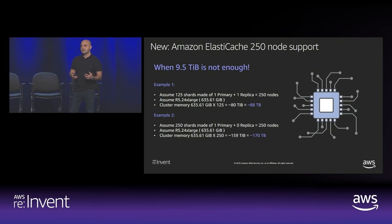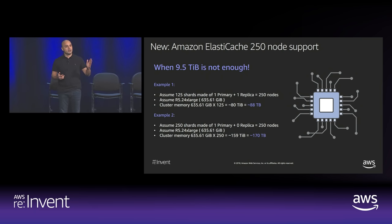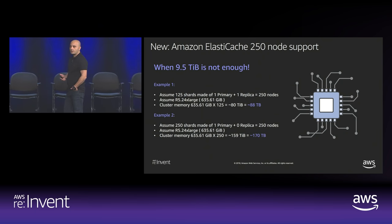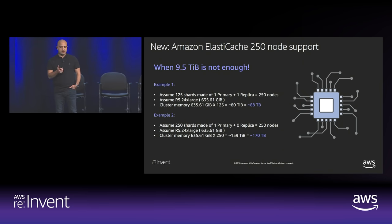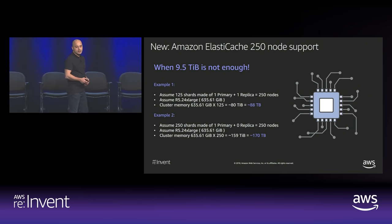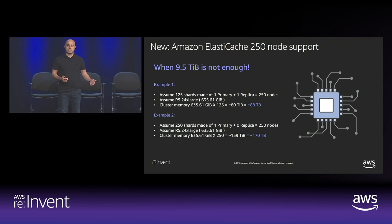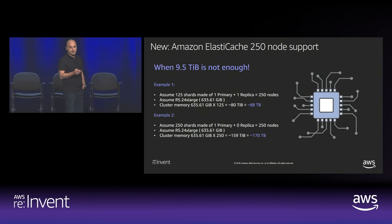Another big announcement: previously the standard configuration was 15 shards. A shard is made up of a primary and up to five replicas, making a max of 90 nodes. We're changing that. If you really have the need for a much larger cluster, 250-node support is available today if you want to get whitelisted. Depending on how many primaries and replicas you have, you can have upwards of 170 terabytes of data in your cluster. People aren't just caching database data anymore — it's session data and a lot of other types of data.